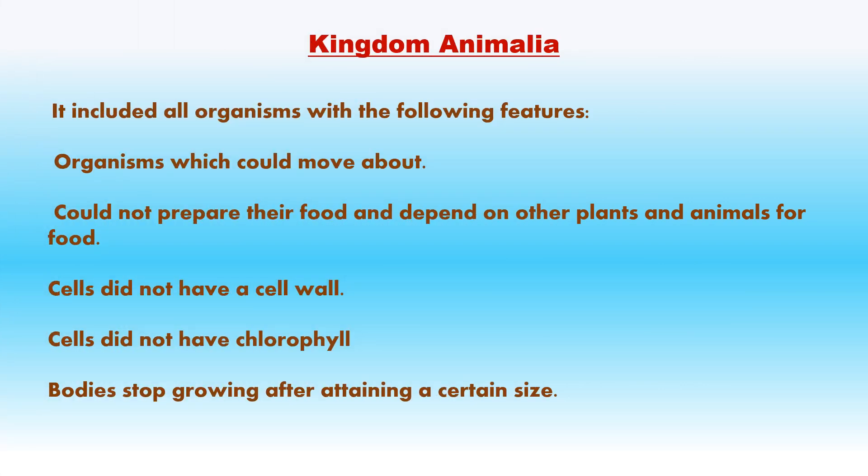Kingdom Animalia included all organisms with the following features: organisms which could move about; could not prepare their own food and depend on other plants and animals for food; cells did not have a cell wall; cells did not have chlorophyll; and bodies stop growing after attaining a certain size.